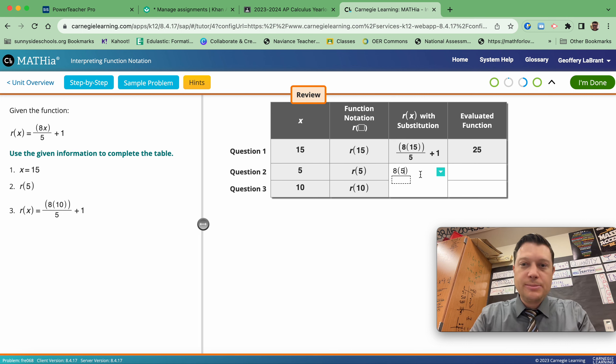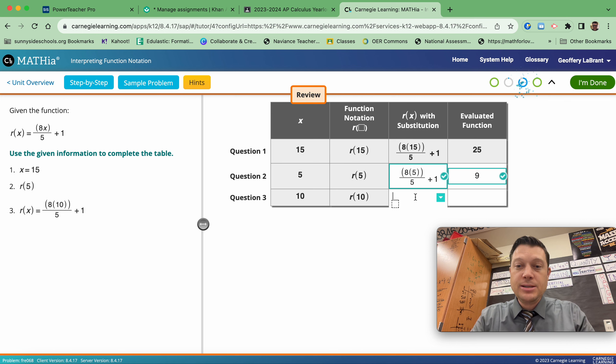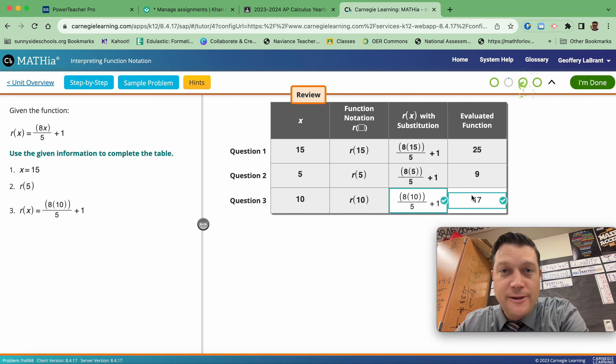Row 2, 8 times 5 over 5 plus 1, and row 3, 8 times 10 over 5 plus 1. The evaluated function answer is already done for you.